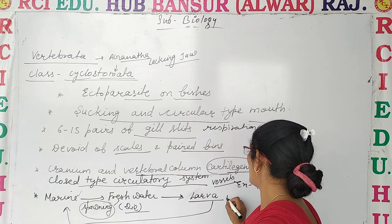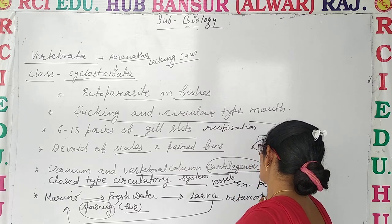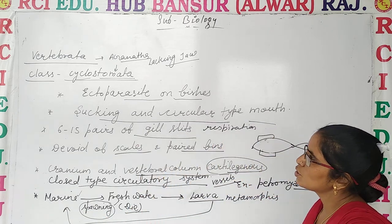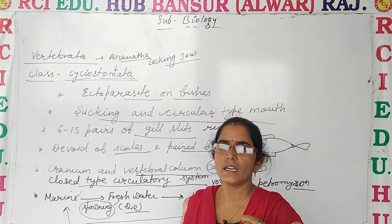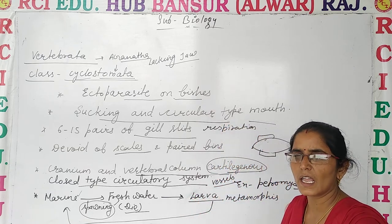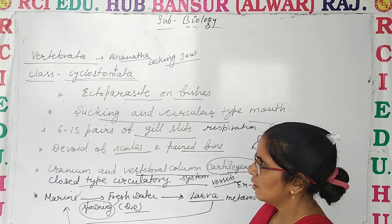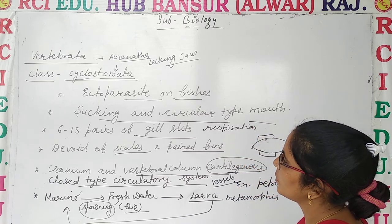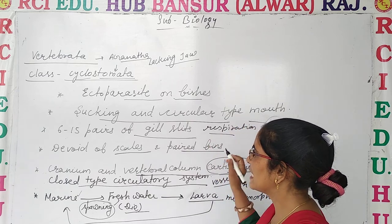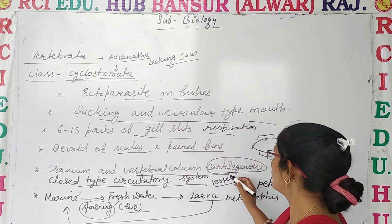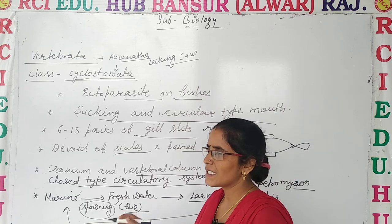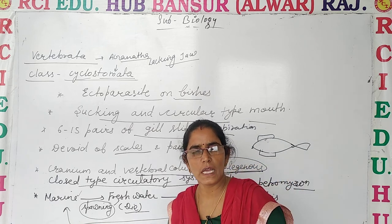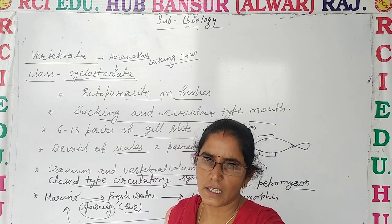The larval form undergoes metamorphosis. So to summarize, Cyclostomata have a circular and sucking type mouth, 6 to 15 pairs of gill slits for respiration, scales are absent, and the cranium and vertebral column are made of cartilage. They survive in marine water but spawn in fresh water, and then the larva undergoes metamorphosis and returns to marine water. Is that clear?